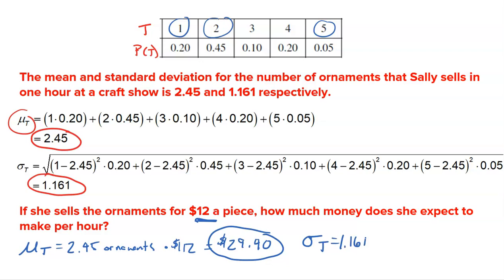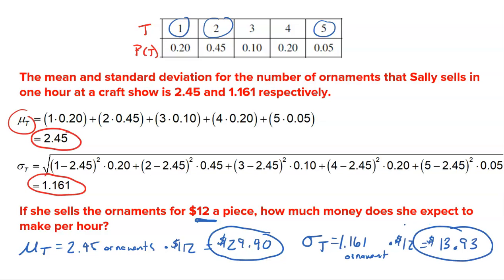What about the standard deviation? Same thing — 1.161 ornaments. We convert that to dollars by multiplying by the fact that every one ornament is worth $12. 1.161 times 12 gives a standard deviation of $13.93. So on average she expects to make $29.40 an hour, and sometimes she sells more or fewer ornaments. If all you're doing is transforming a random variable to a different unit, all you have to do is multiply.